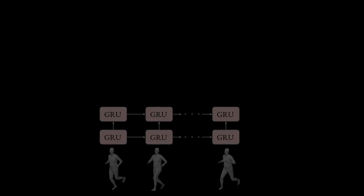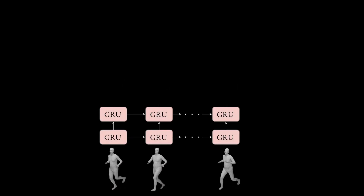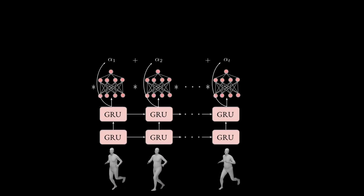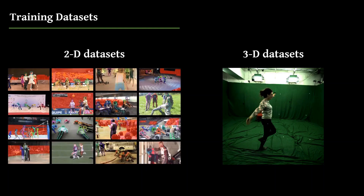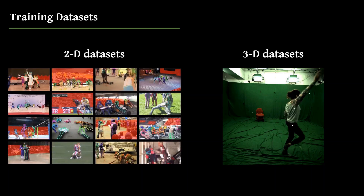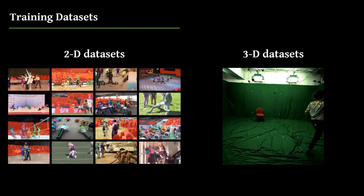The motion discriminator uses a stack of GRU layers to process poses sequentially. Then, a self-attention mechanism dynamically aggregates features and amplifies the contribution of important frames. During training, we use a mix of 2D and 3D datasets.